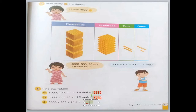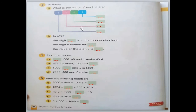Next, question C: 3,000 plus 100 plus 70 plus 5 — on the thousands put 3, on the hundreds put 1, on the tens put 7, and on the ones put 5. Let's go to the next one: what is the value of each digit? Remember, the value means you have to write down the number with the zeros.